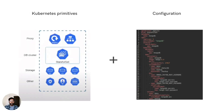So basically, when we are looking at any stateful application in Kubernetes, there are two parts to it: the Kubernetes primitives like stateful sets, pods, secrets, and all that — and the MongoDB configuration.